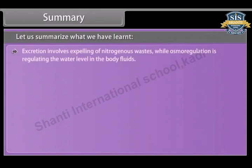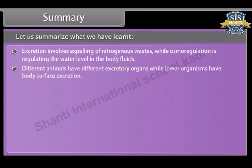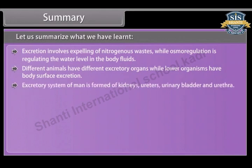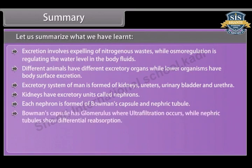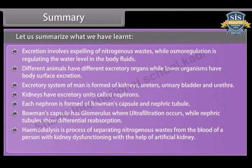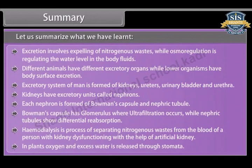Excretion involves expelling of nitrogenous wastes, while osmoregulation is regulating the water level in body fluids. Different animals have different excretory organs, while lower organisms have body surface excretion. The excretory system of humans is formed of kidneys, ureters, urinary bladder, and urethra. Kidneys have excretory units called nephrons, each formed of Bowman's capsule and nephric tubule. The glomerulus performs ultrafiltration, while nephric tubules show differential reabsorption. Haemodialysis separates nitrogenous wastes from the blood using an artificial kidney. In plants, oxygen and excess water are released through stomata.